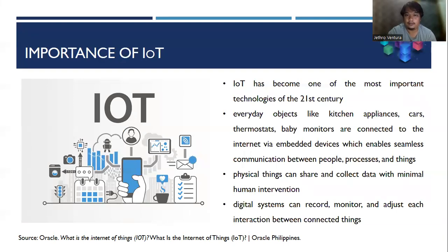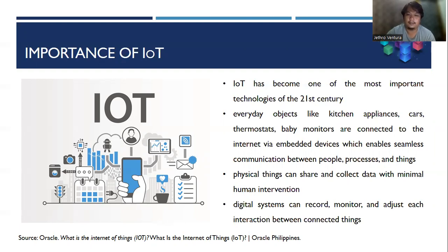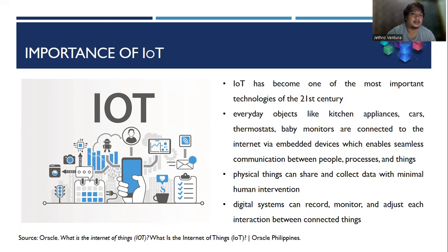What is the importance of IoT? IoT has become one of the most important technologies of the 21st century. Every object like kitchen appliances, cars, thermostats, and baby monitors are already connected to the Internet via embedded devices, which enables seamless communication between people, processes, and things. These physical things can share and collect data with minimal human intervention, though users must agree to data collection agreements and privacy concerns. Digital systems can record, monitor, and adjust each interaction between connected things.